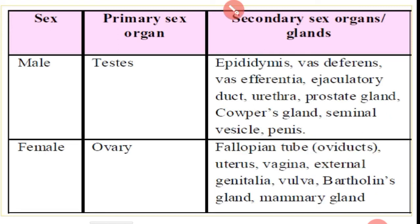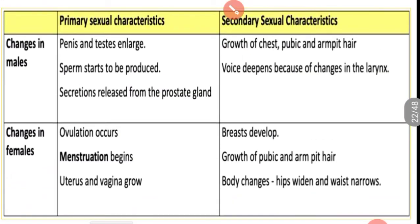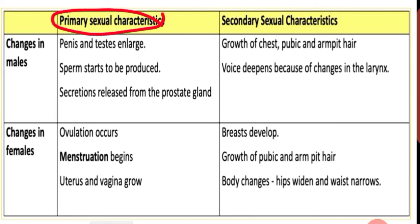Now we are going to see primary and secondary sexual characters. At the time of puberty, when attaining the age, some changes occur in males and females. In males, what are the changes that occur in the form of primary sexual characters?